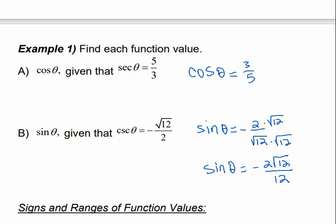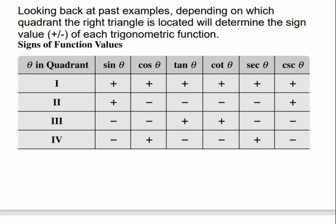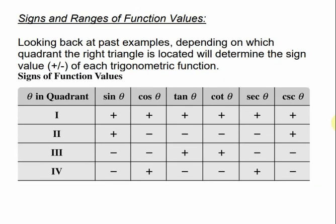We talked about quadrantal angles in the last section. Depending on which quadrant our triangle is located in, that's going to determine the signs of each trig function. For example, if our triangle is located in quadrant 1, then sine, cosine, tangent — all of the trig functions are going to be positive.